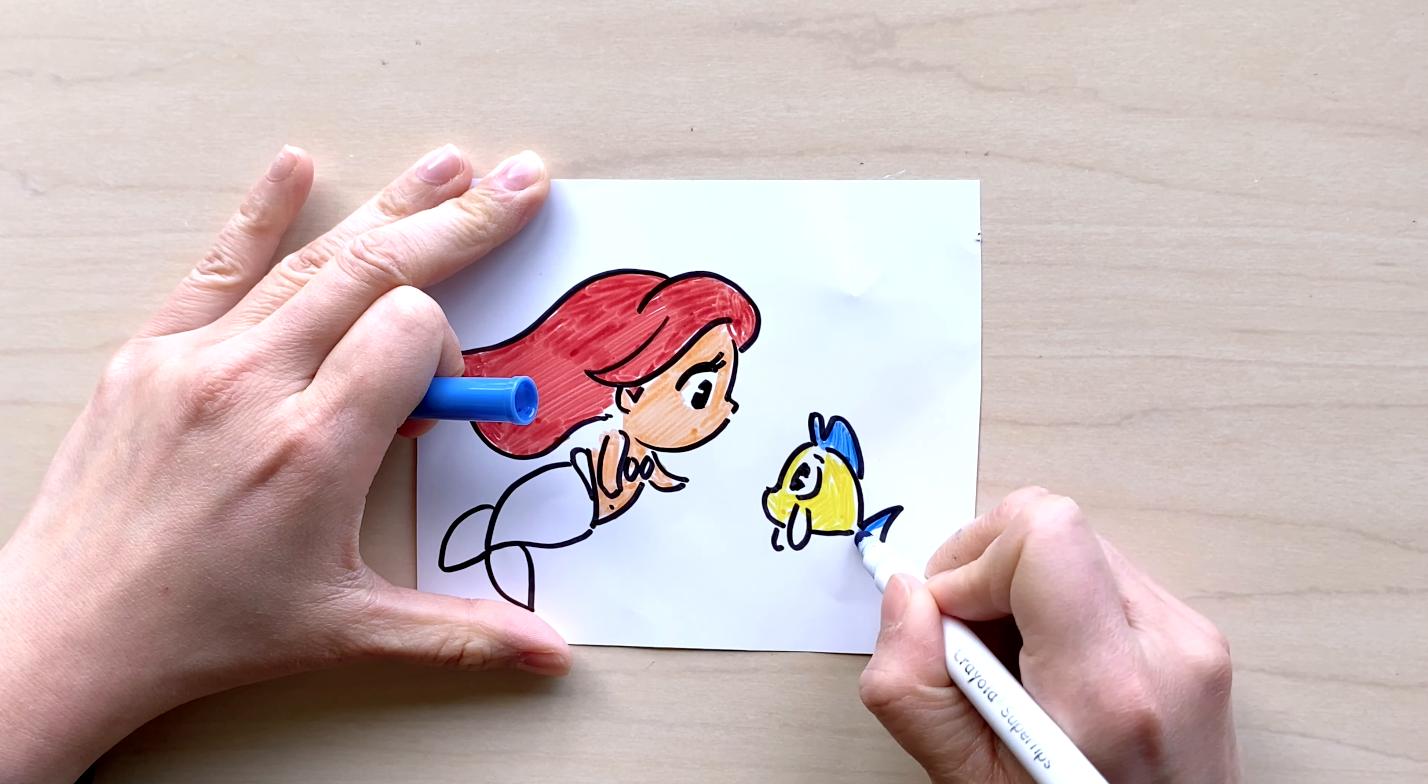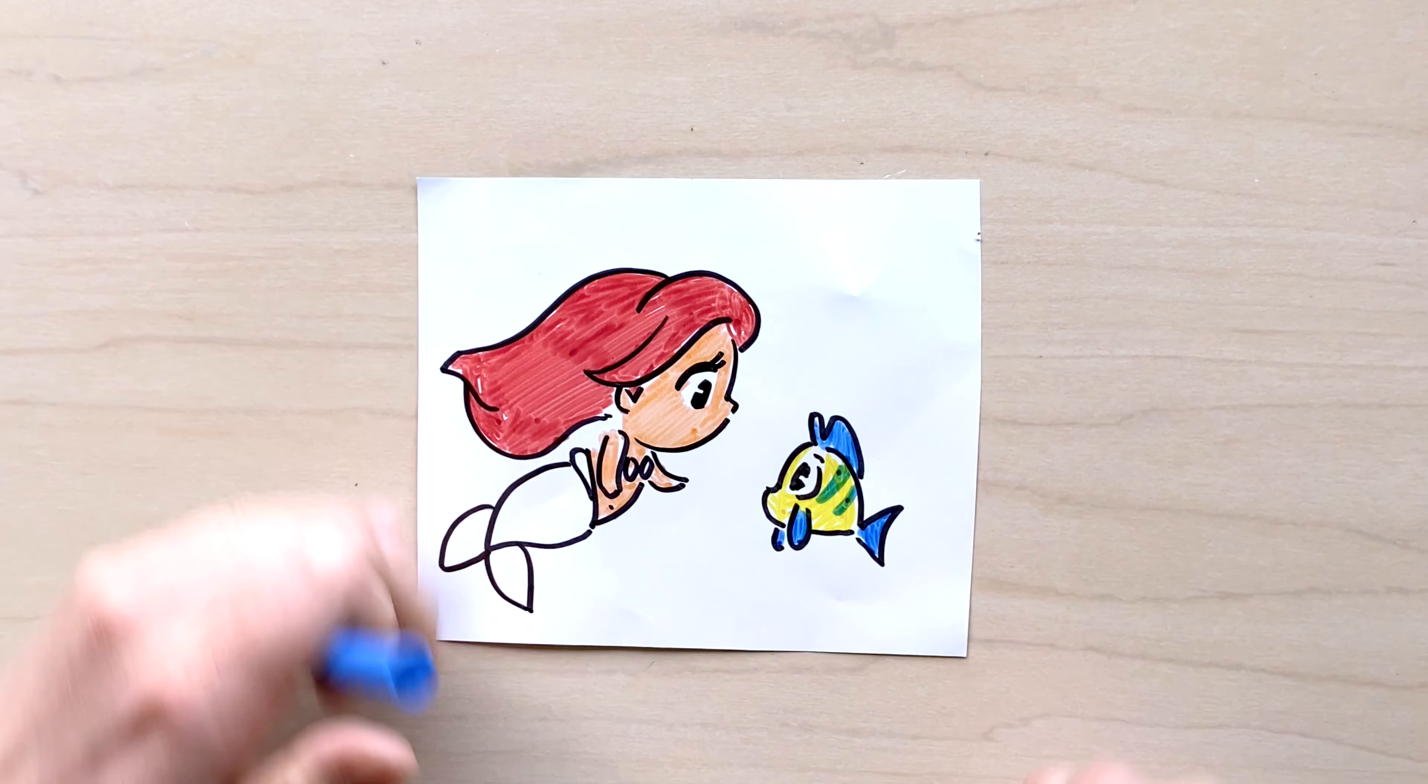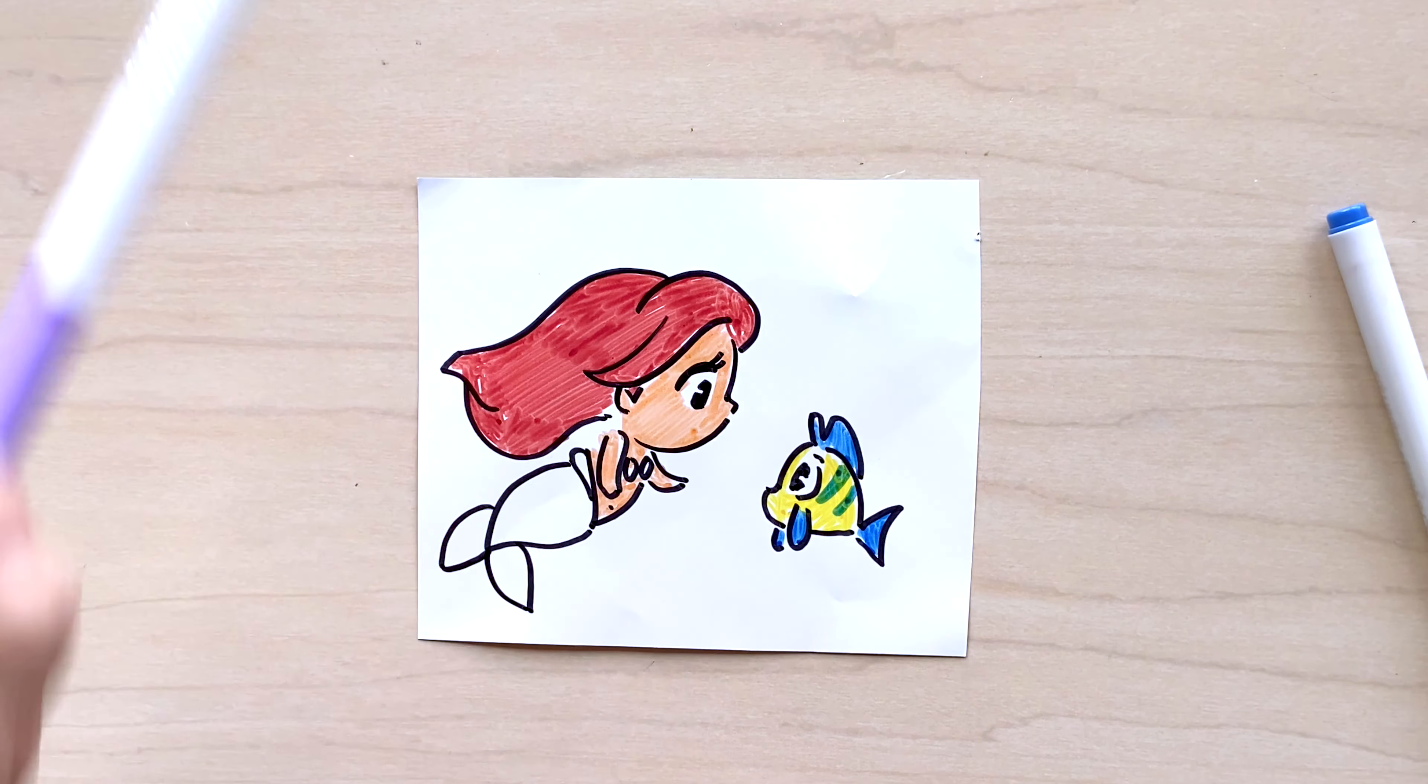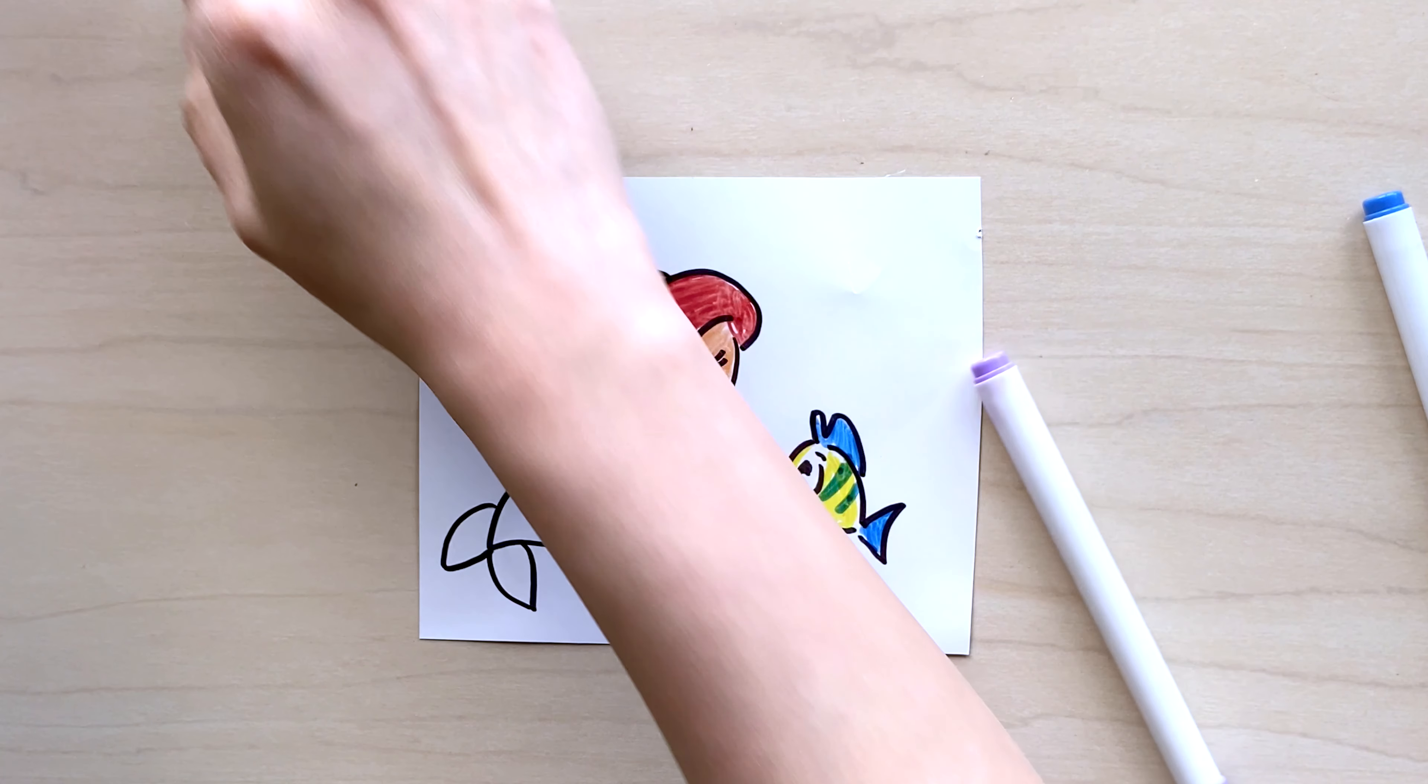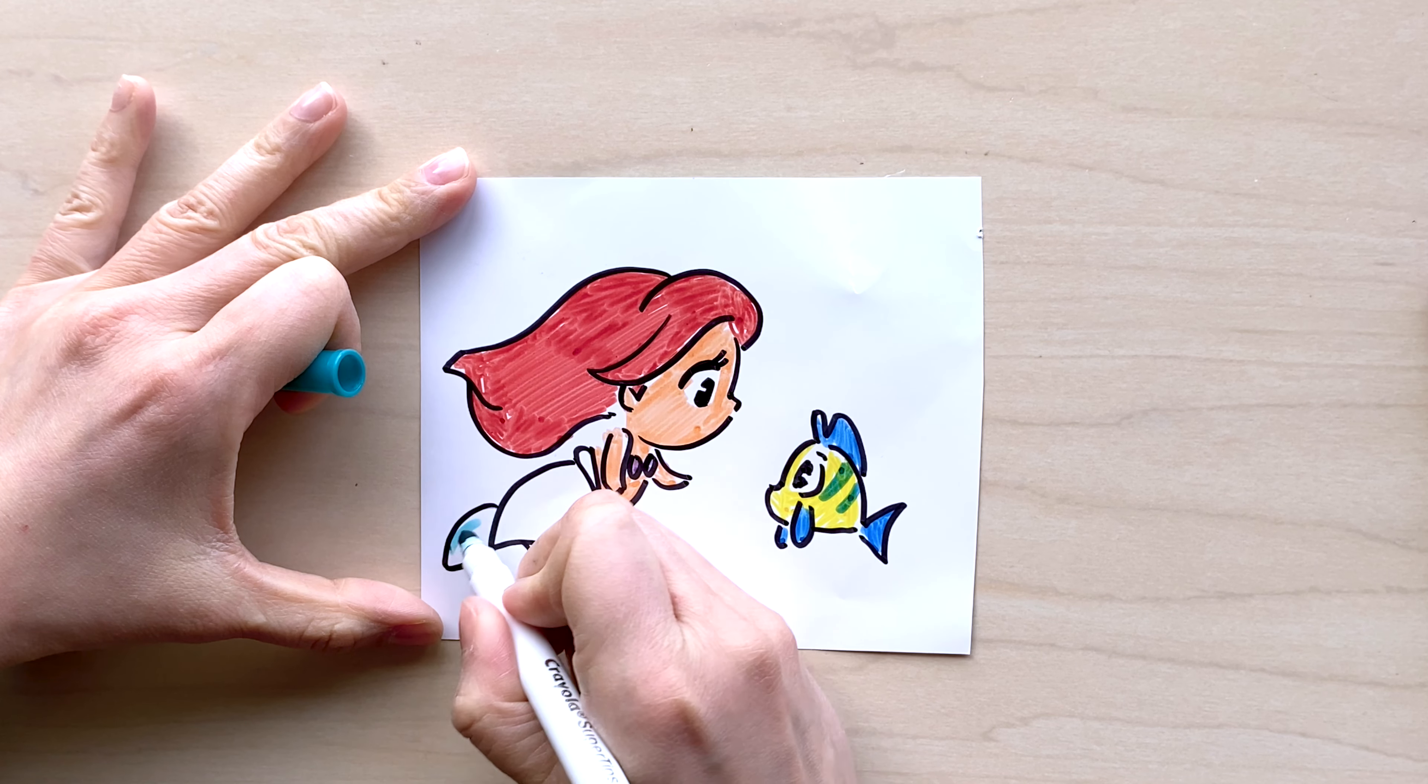Next I'm going to grab a little bit of purple or lilac color to color in the seashell, and of course I need to color in her tail, which I think I have a turquoise that I can use for her fins at the end. For her tail, I'm probably going to do more of a pattern rather than coloring it solid. Feel free if you would like to do different types of pattern for Ariel's tail as well.